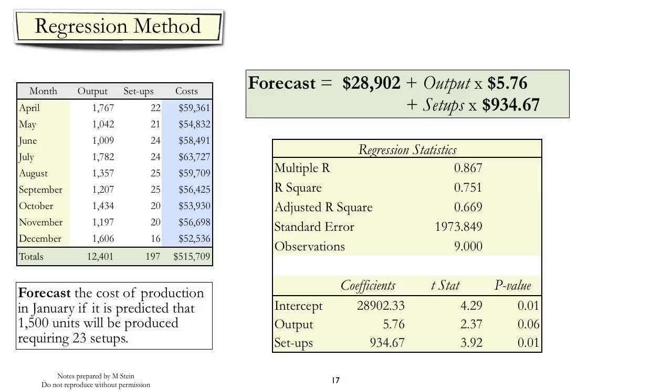From the regression results, we see the intercept at $28,902, and we're going to use that as our estimation of fixed costs. The variable component related to output is now $5.76, and our variable cost related to the number of setups is $934.67.